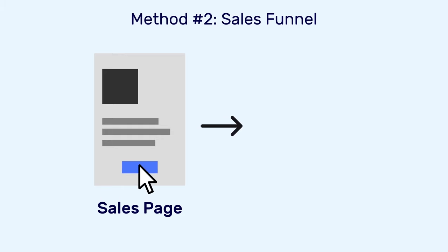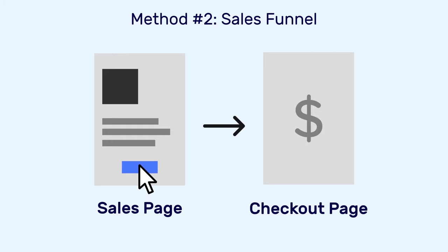The next method is through a sales funnel, which is where you have a dedicated sales page to explain the product in detail. You can share testimonials, video testimonials, and more, leading over to the checkout page. There is much less friction involved in this process — it's only a two-step process.